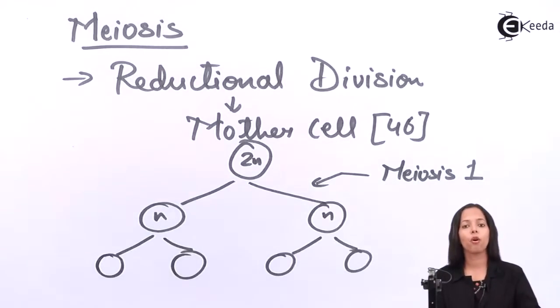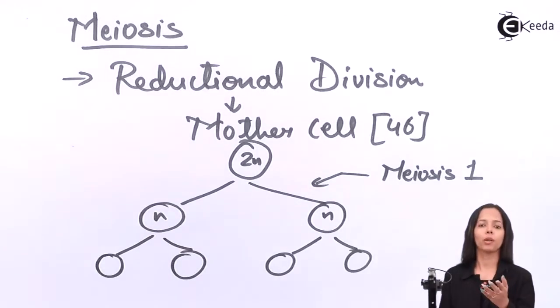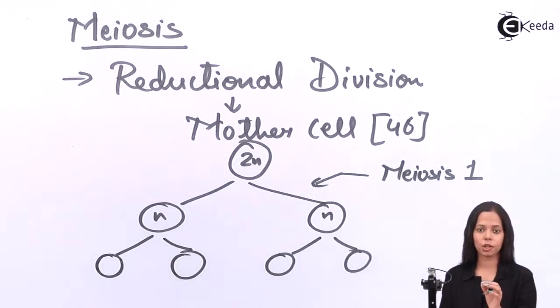And they form 2 same sets, 2 daughter cells which have same set of chromosome. And that results in formation of 4 cells which goes according to the definition I taught you. Let me repeat the definition once again. What is cell division? It's a process in which mother cell divides to form 2 or 4 daughter cells. Mitosis, 2 daughter cells are formed. Meiosis, 4 daughter cells are formed.